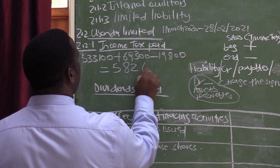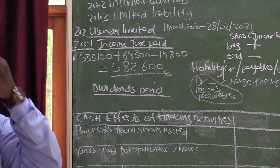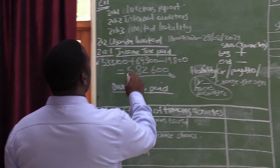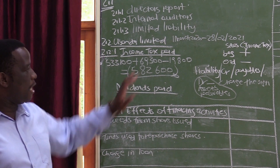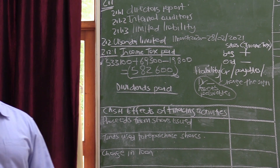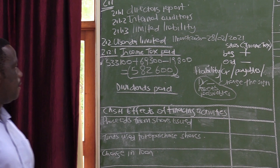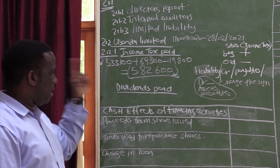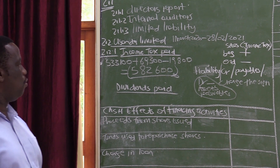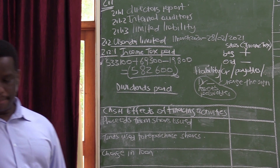The exact amount paid to SARS is 582,600. Remember, when doing the cash flow statement, we want the exact amount that was paid. This amount must be put in brackets in the cash flow statement because it is an outflow. If you do not include brackets in the final cash flow statement, it will be marked wrong. In your working calculations, brackets are not required, but they are essential in the cash flow statement itself.